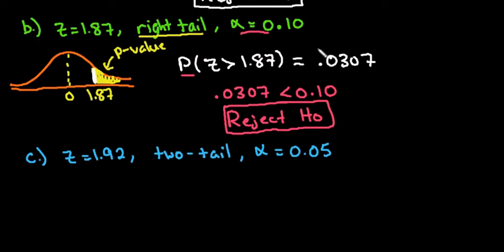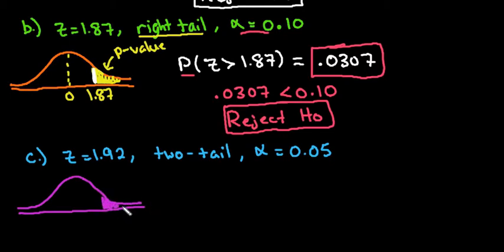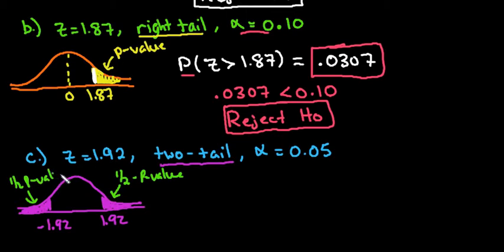Moving on to the next one. The next one is we have a two-tail test. When you have a two-tail test, the standardized test statistic that they give you, you would label that in your model. So this would be 1.92. And then we would also shade the other tail since it says two-tail. And this one starts at negative 1.92. So what's going to happen in a two-tail test is that half of my P value is in the right, and half of my P value is in the left tail. So that means that whichever one I'm given, I'm going to find the area that is more extreme than that and multiply it by two.